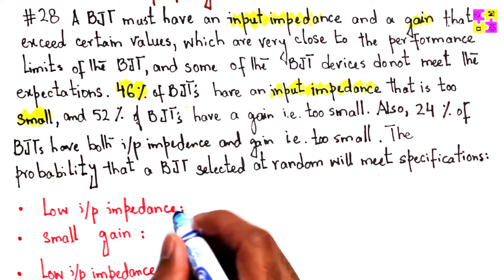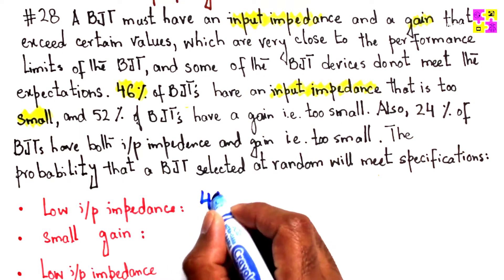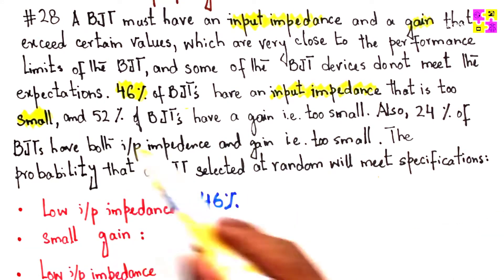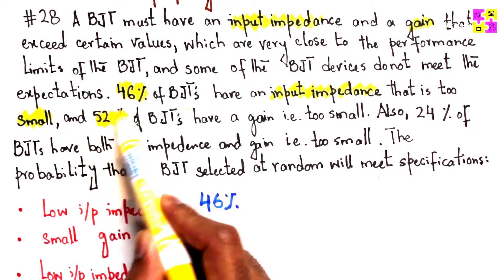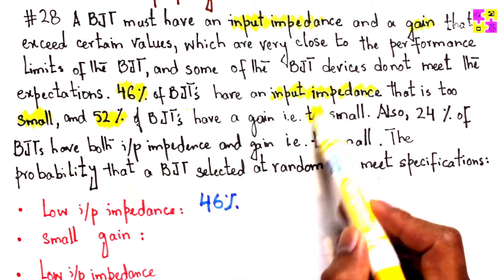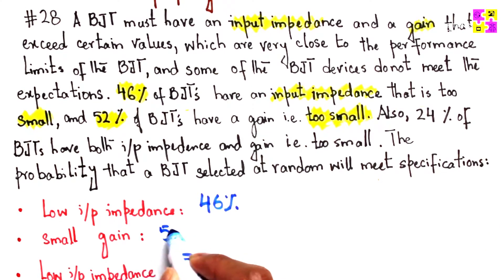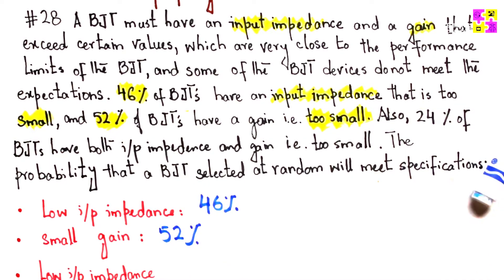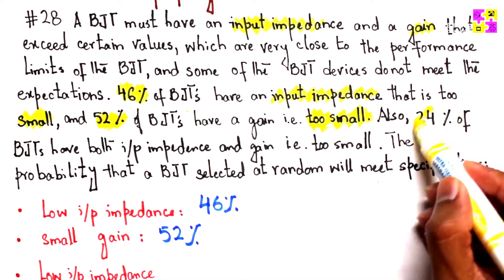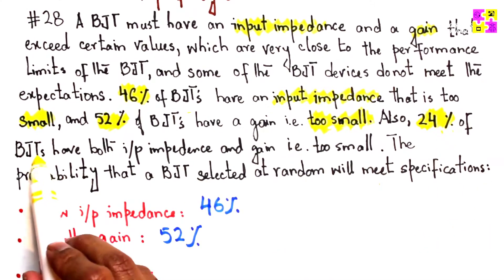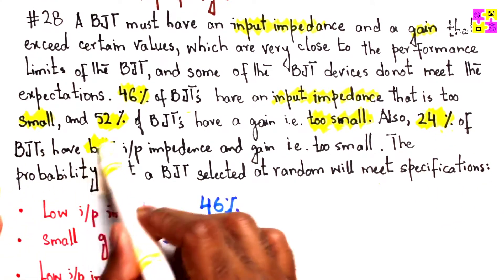Now, 52% of BJTs have a gain that is too small. So small gain is 52%.